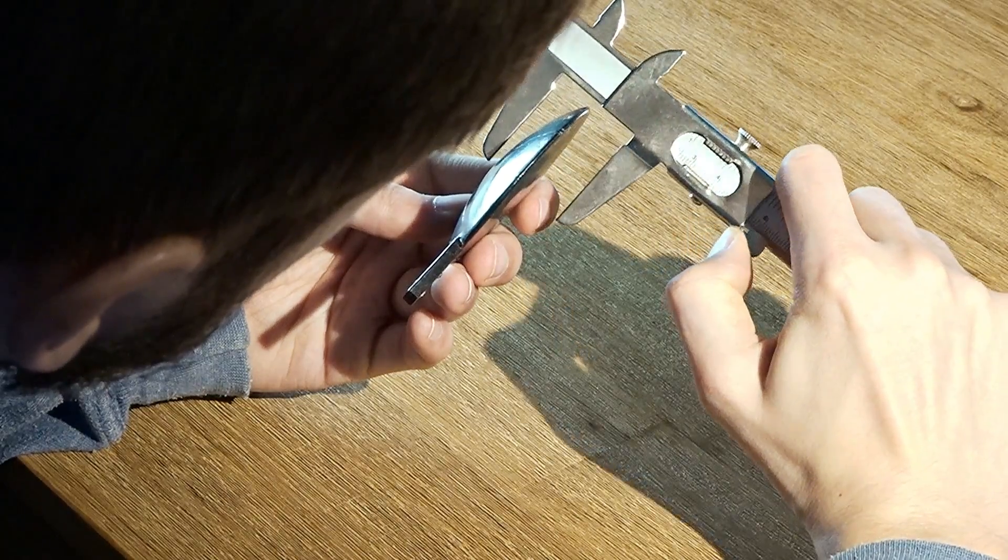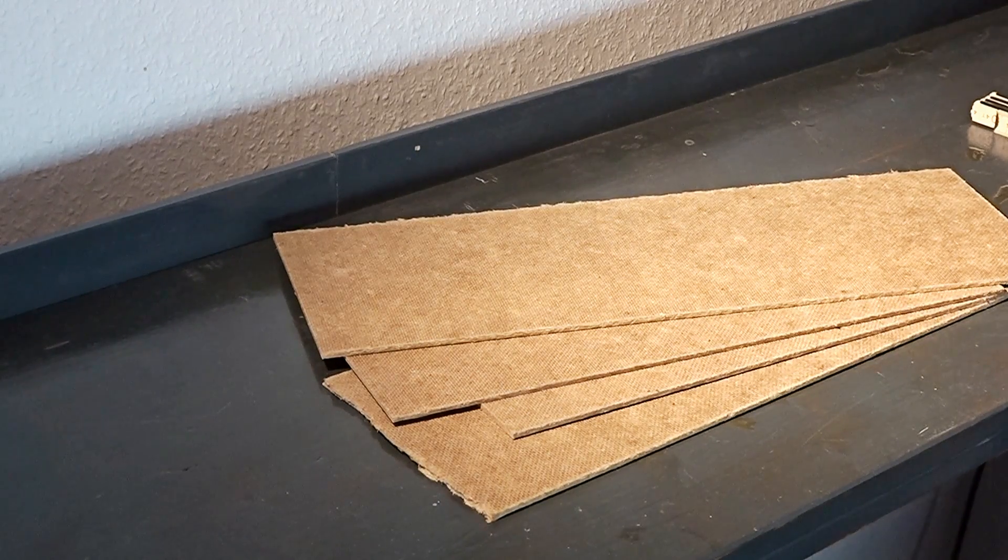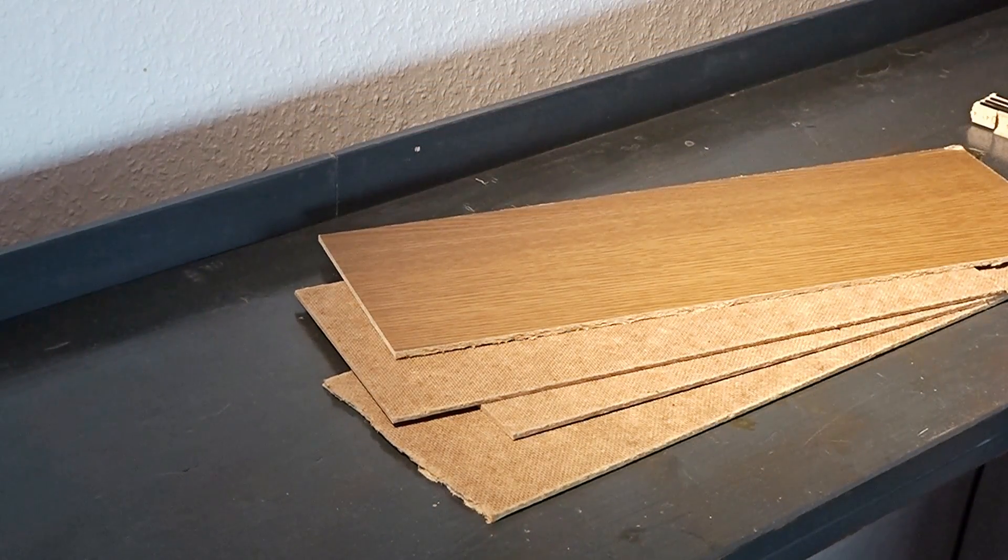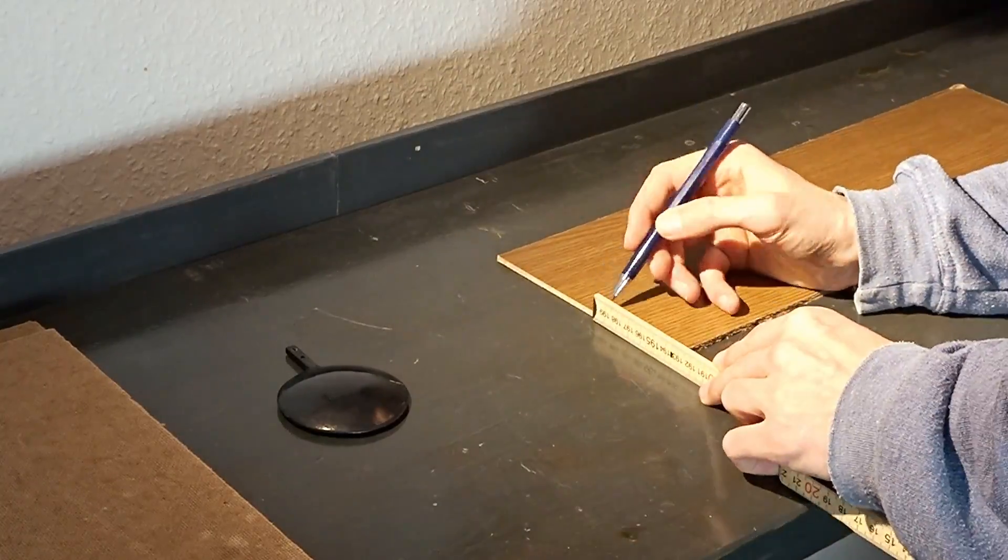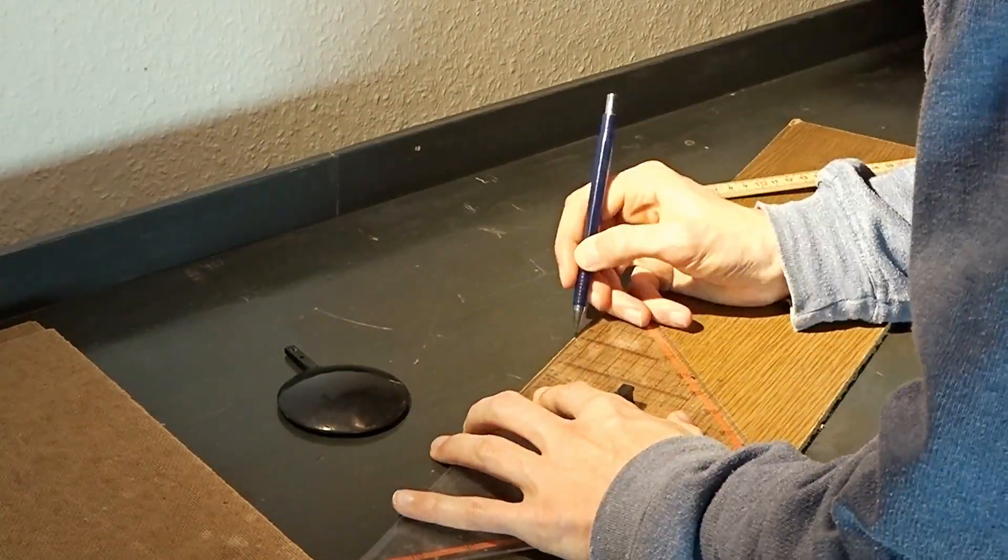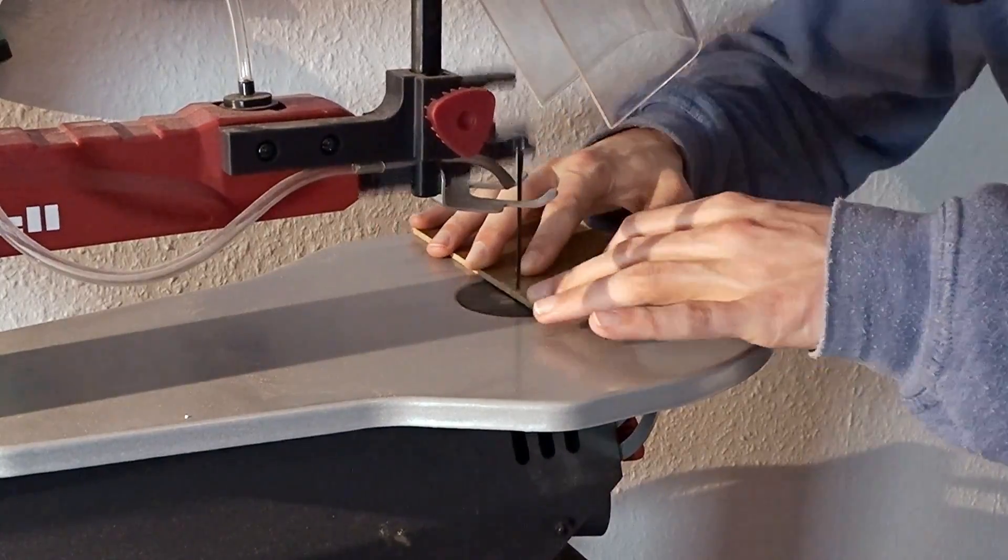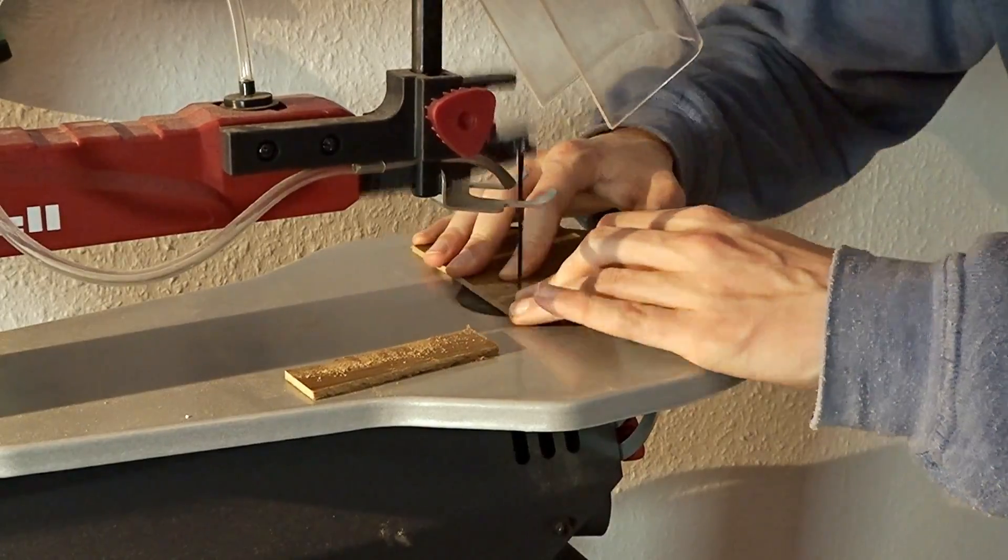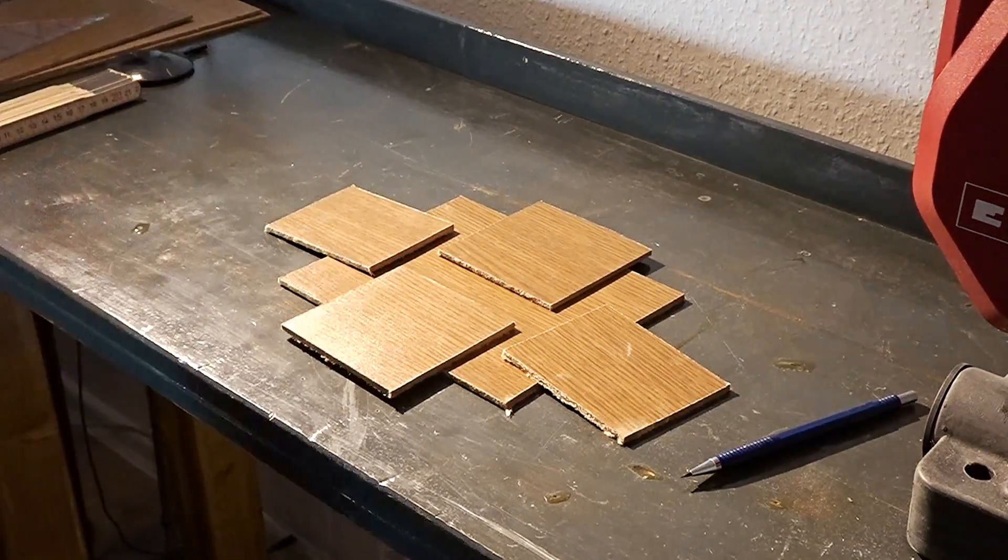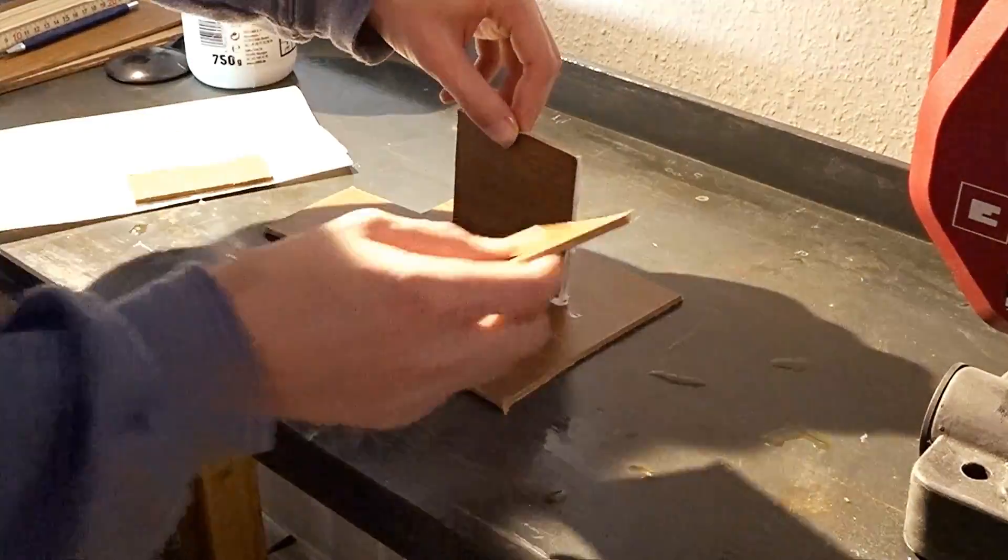The next step is to build the box for the casting mold and I made this roughly 1.5 cm larger in every direction compared to the lens itself. The material for this doesn't really matter as long as it can be cut quite easily and at least one side is pretty smooth.